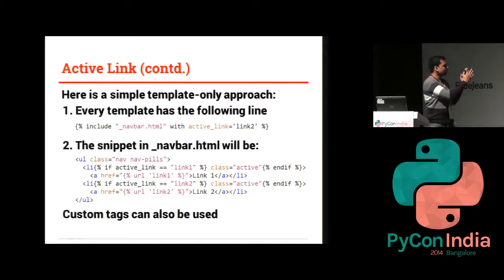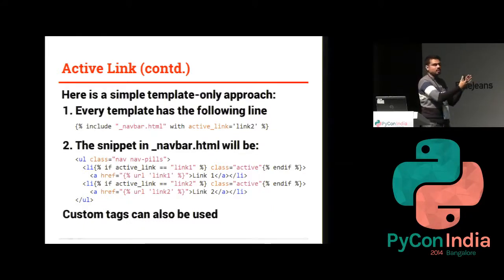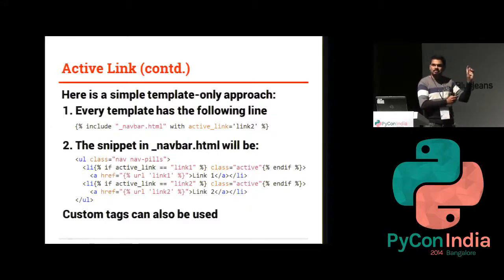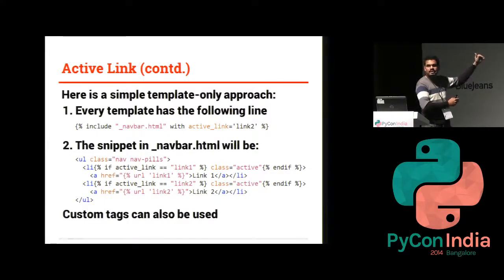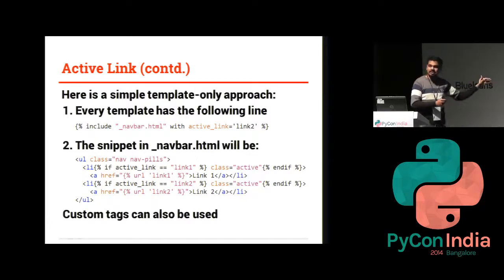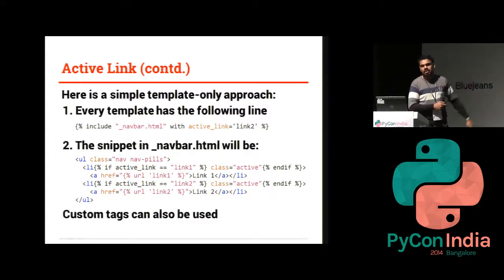Another common template design pattern is the active link. In any menu or navigation bar, the user should know where they are at any point in time, so that location is highlighted. This is done using an active class added to that particular link. A simple way to implement this using only templates is the include syntax — you have a snippet, say nav_navbar.html, and you pass what active link is being used. The snippet simply has if statements that check whether that particular active link is set to a value and renders the appropriate link.